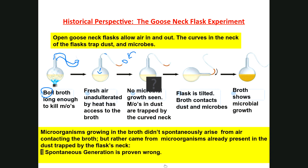Even though air was able to go in, the broth remained sterile. That way, Pasteur proved that what contaminated the broth — the organisms that appeared — came from mother cells in the broth. Once you kill the mother cells, there was no other source of life and the broth remained sterile. The curves of the flask trapped the dust that was carrying the microorganisms, so essentially filtered air was going into an already sterile solution.